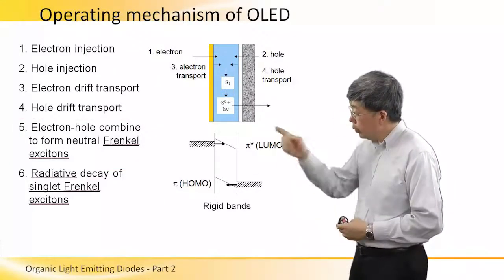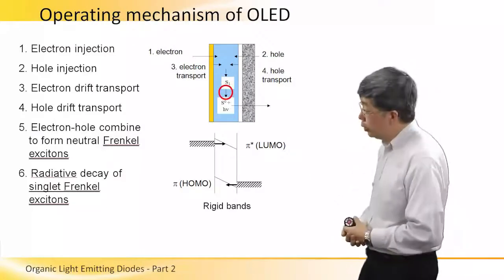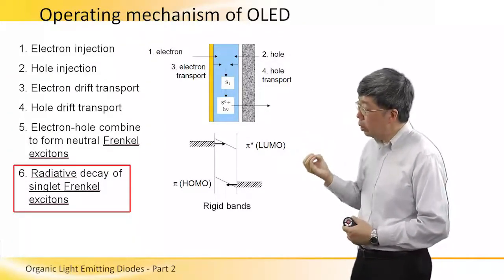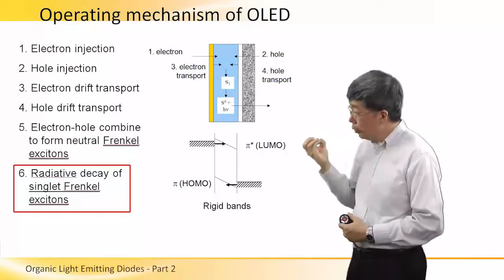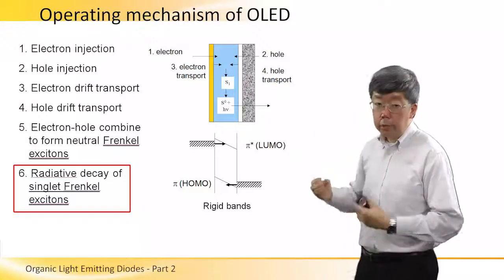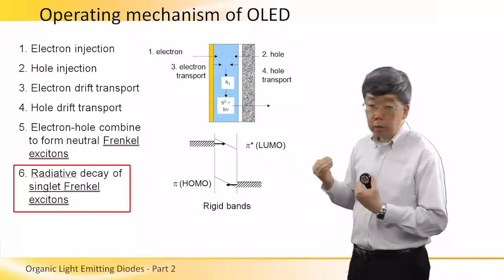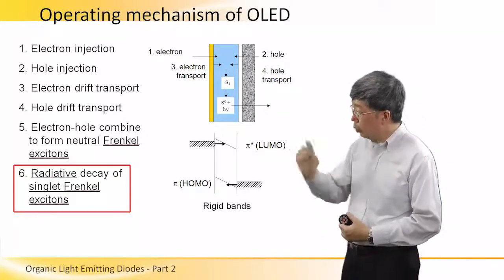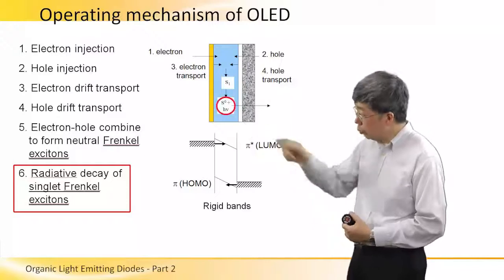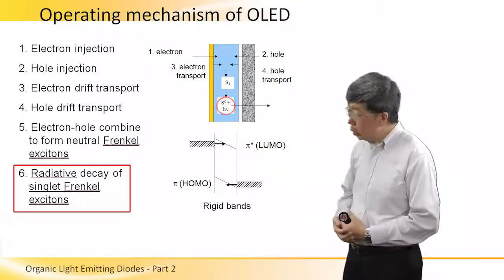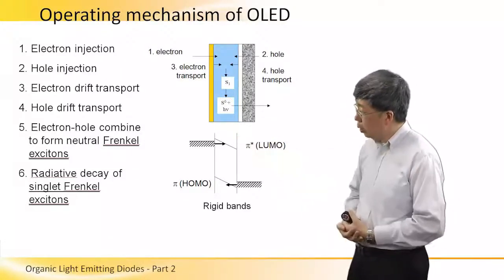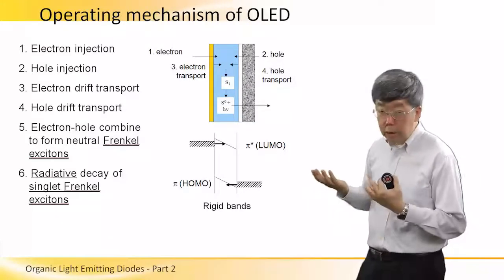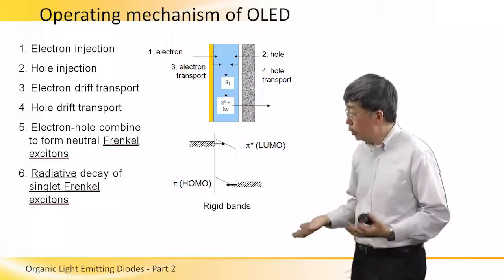Below the S1 symbol, we see an arrow showing the last step in the EL process. This singlet Frenkel exciton is not stable. After some time, it will decay by recombination, and the energy of the singlet Frenkel exciton is converted to a photon. This photon is represented by the symbol hν in the diagram. The photon can escape from this device through the anode layer and the glass substrate, and this is the reason why we can observe the light from the OLED.